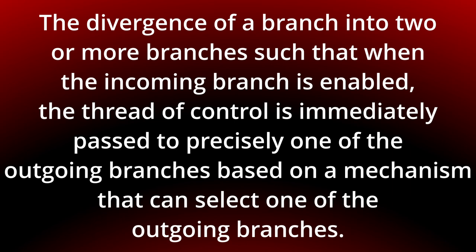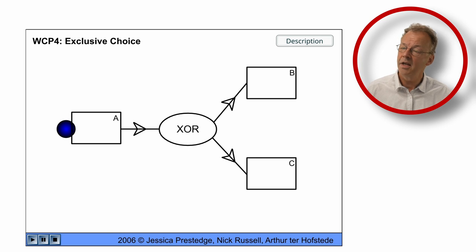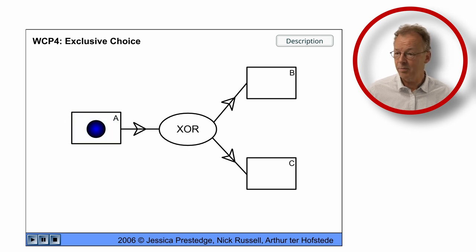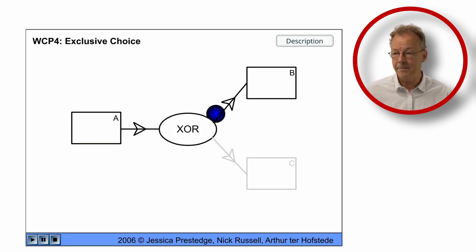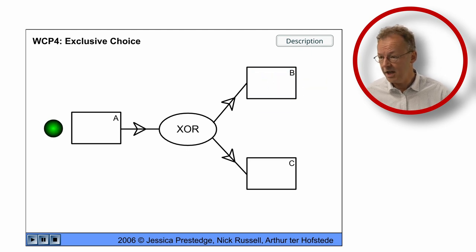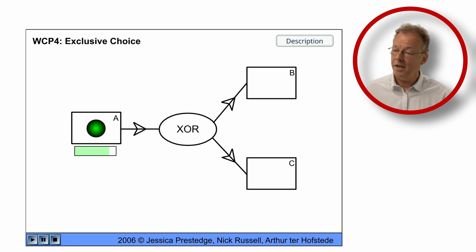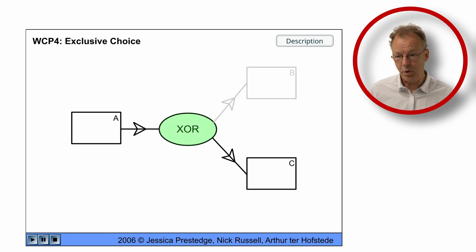You can see the behavior in the original flash animation. So here we have task A and then we have the XOR split and then we go to B. In the second case we have A, the XOR split and then we go to C.